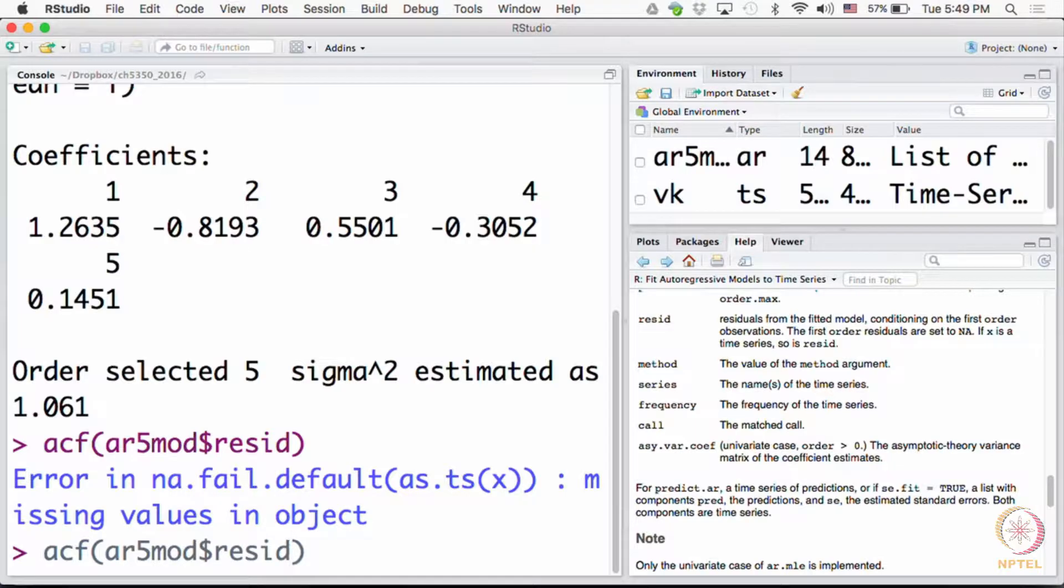Why should there be a missing value? Who went missing? What went missing? It clearly says error in NA dot fail, missing values in the object. It doesn't say faulty object or incompatible object, nothing like that. So the first thing one wants, because it's telling that there are missing values, let's open up the residuals and maybe look at the first few observations.